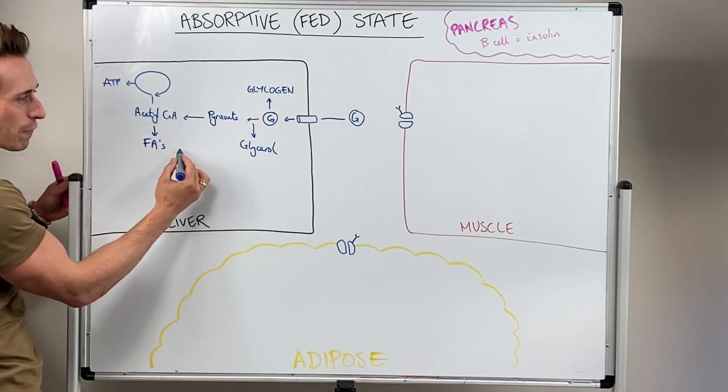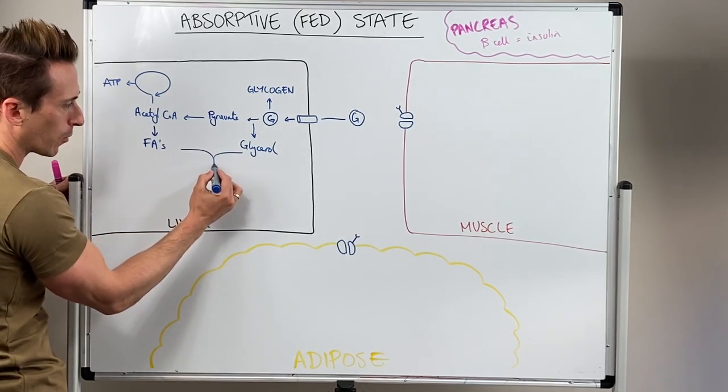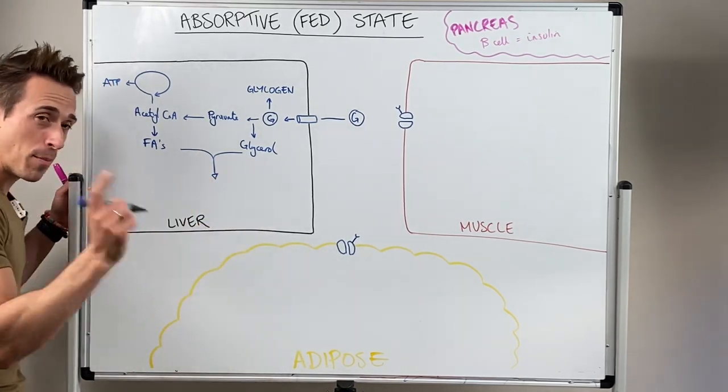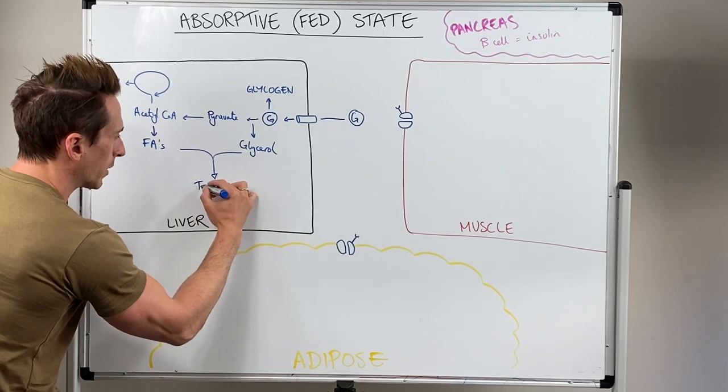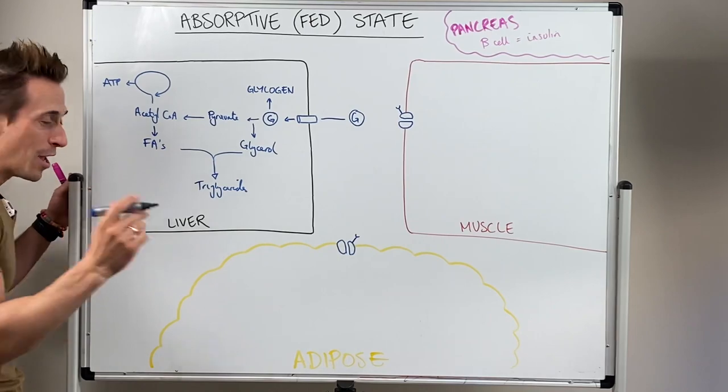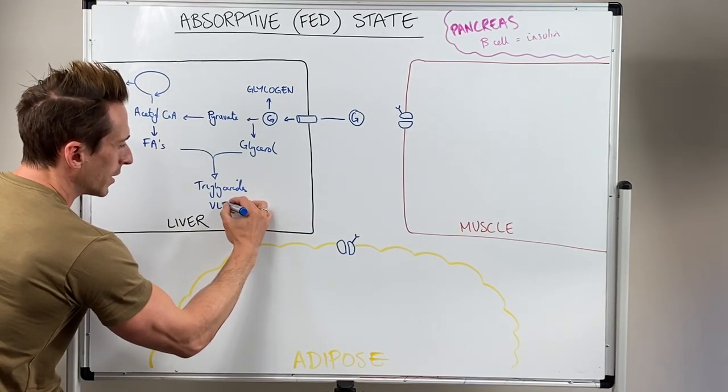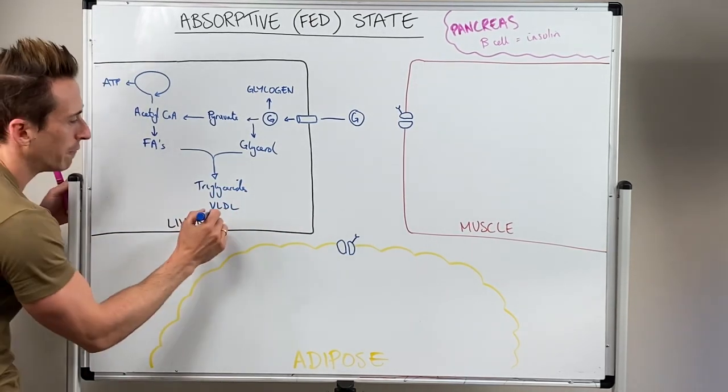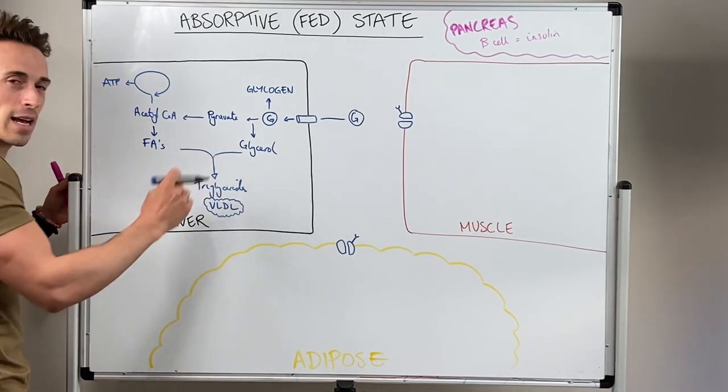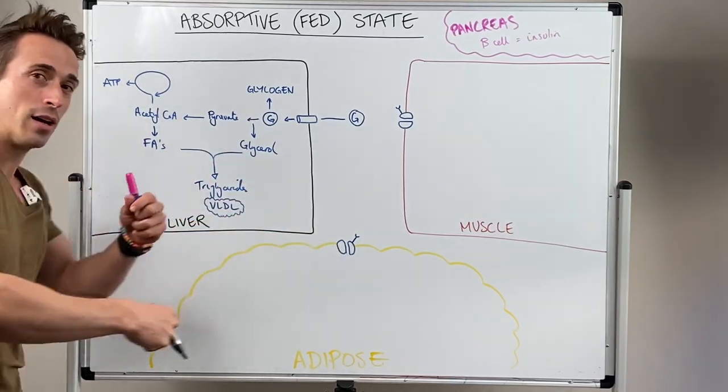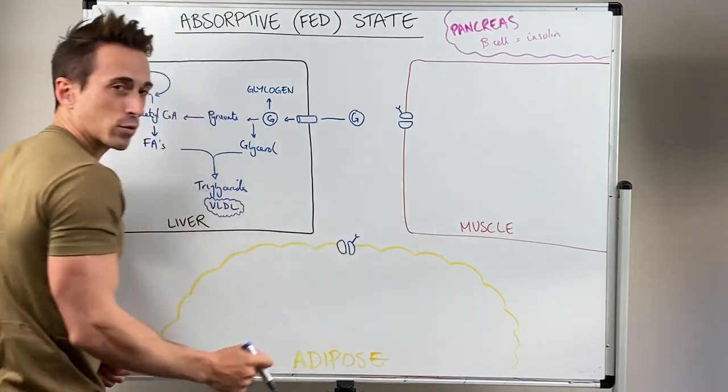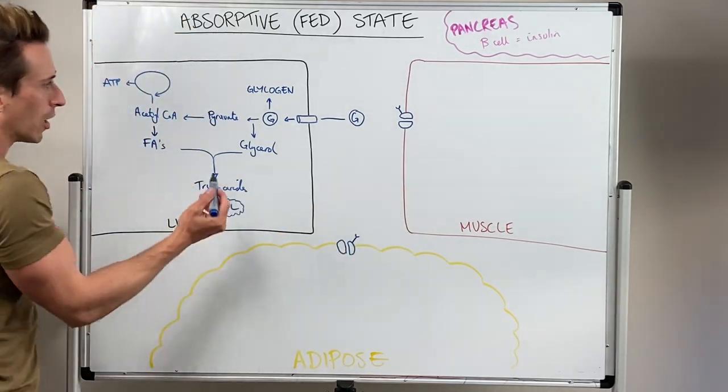If we bring fatty acids and glycerol together, what do we get? Triglycerides, which is the stored form of fat, and we can also get very low-density lipoproteins. Very low-density lipoproteins have lots of fatty acids and glycerol, can travel throughout the body and deliver these substances to the adipose tissue, to the muscle tissue, to different tissues of the body.